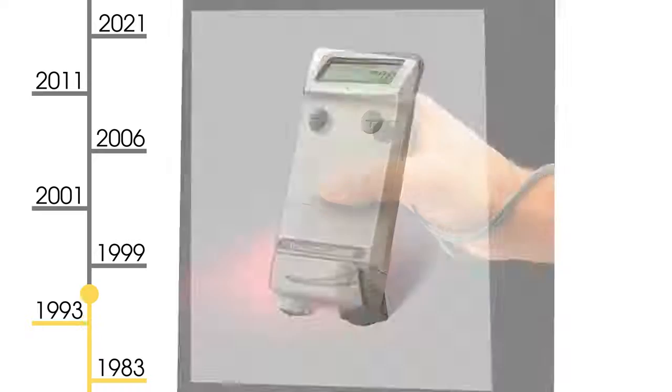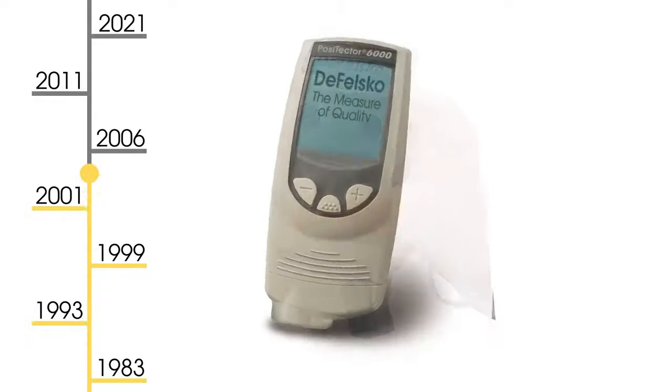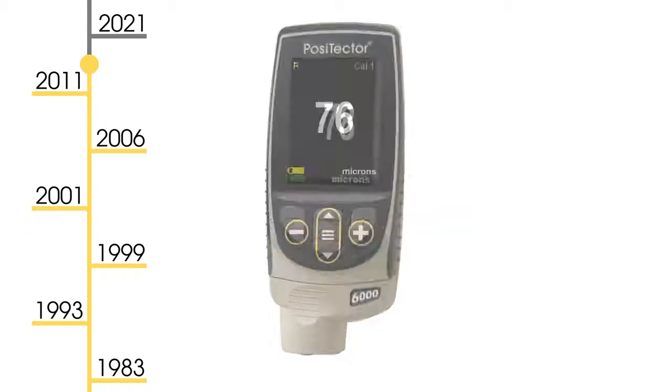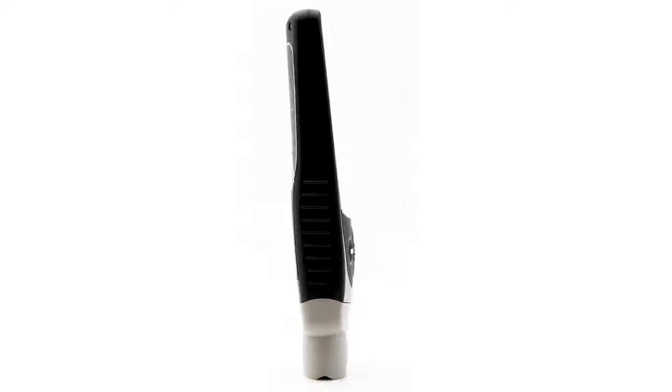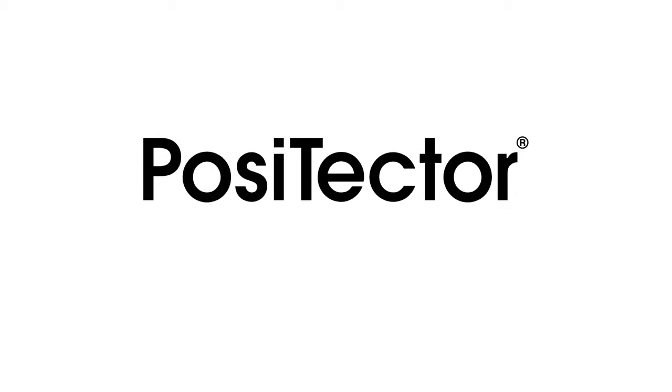For over 55 years, DeFelsko has been a leader in inspection equipment, manufacturing simple, durable, and accurate gauges. Backed by DeFelsko's renowned quality, customer service, and exceptional two-year warranty, the new Positector gauge body is the ideal platform for any inspection need.